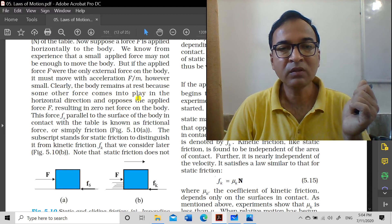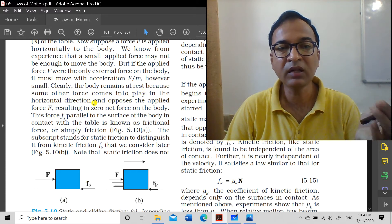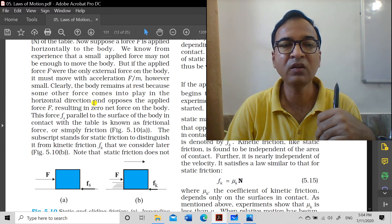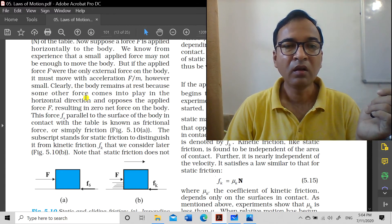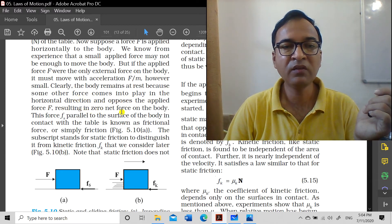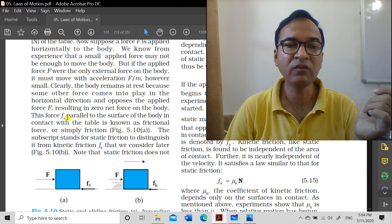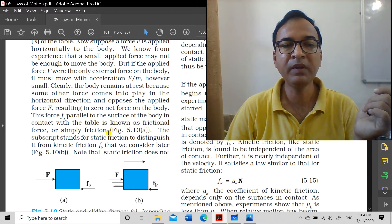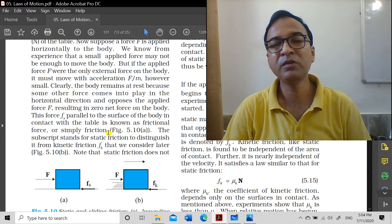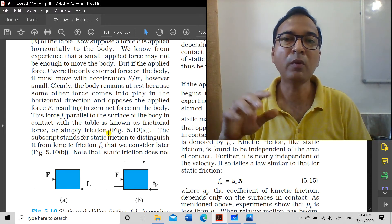Some other force comes into play in the horizontal direction. As you apply force, a force comes into existence with magnitude exactly equal and opposite, opposing the applied force F, resulting in zero net force on the body, which is why the body doesn't move. This force, shown as small f subscript s, parallel to the surface of the body in contact with the table, is known as frictional force or simply friction.